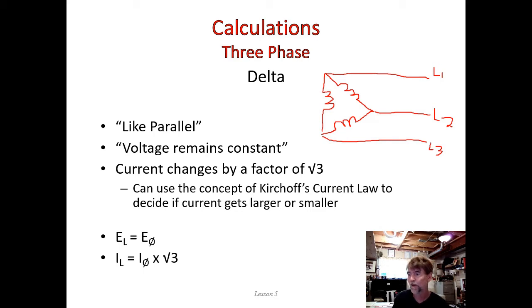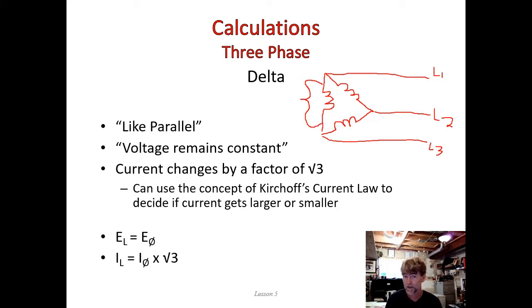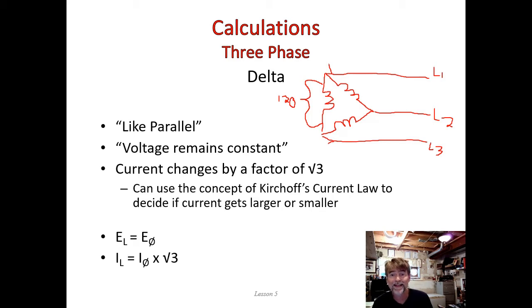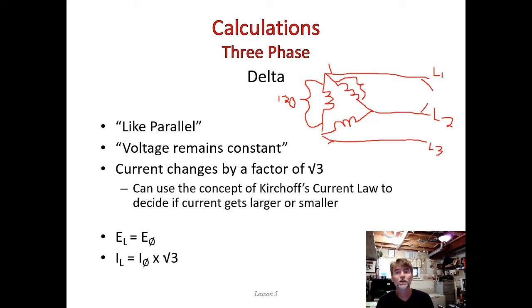Voltage remains constant in a delta connection. If the voltage rise from the power source across a coil is 120 volts, the line voltage from line one to line three is also 120 volts — same across all paths. It doesn't matter where you look, you get the same number. Voltage in a delta system is constant.